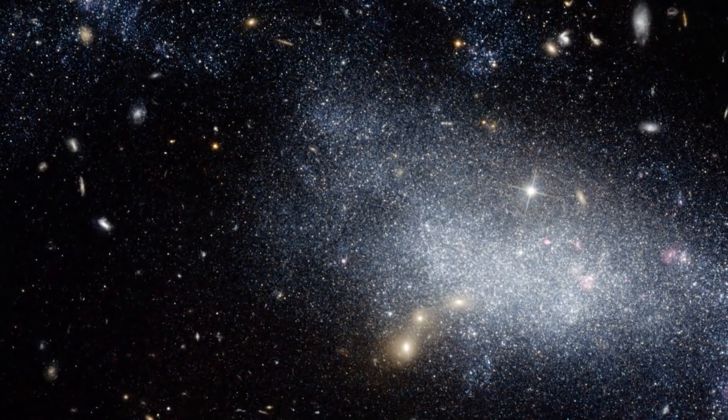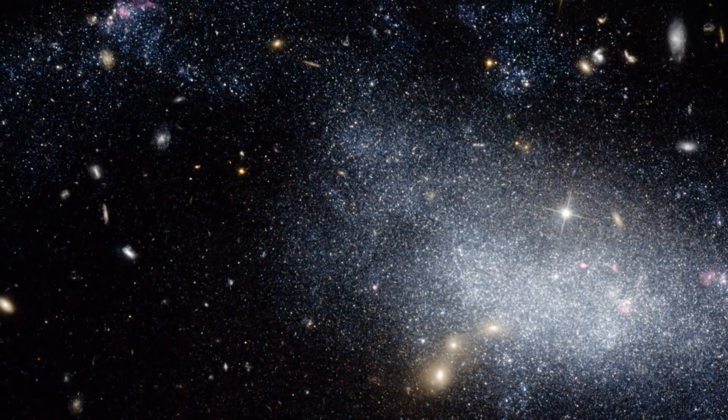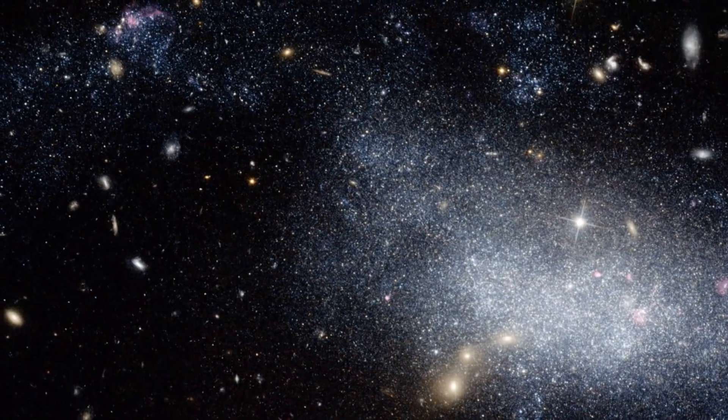Most of these galaxies were relatively small and faint, with masses similar to those of the satellite galaxies surrounding the Milky Way.